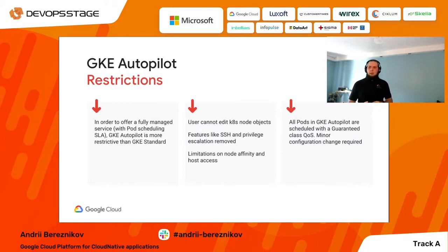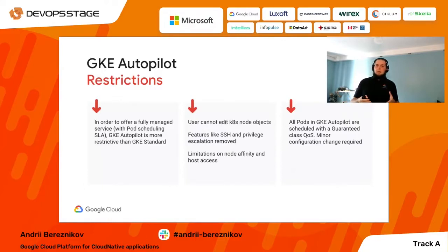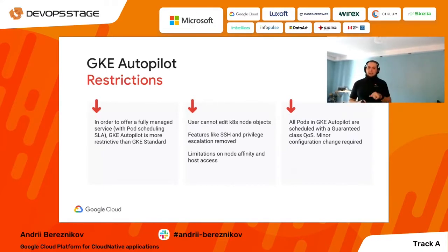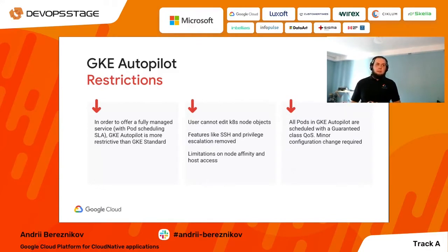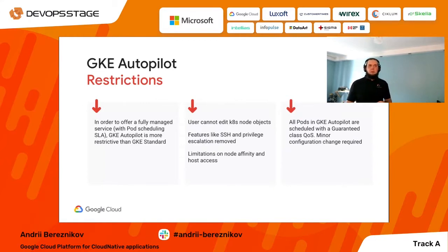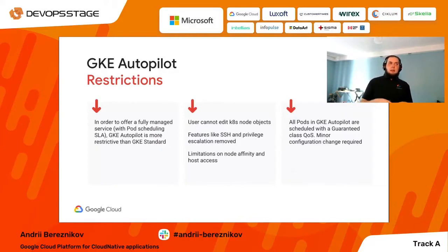Usually SLAs for managed GKE services are provided at the control plane availability level. In the case of GKE Autopilot, you will have SLA at the pod level. We can provide 99.9% SLA at pod level — we can ensure that in a regional deployment, pods will be available not less than 99.9% of the time.